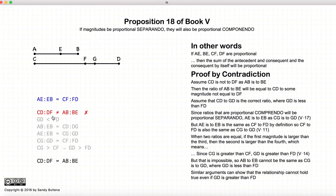So CD to DF not equal to AB to BE is false, which basically gives us if AE to EB is equal to CF to FD, then CD to DF would be equal to AB to BE. And there we have our proposition has been proven.